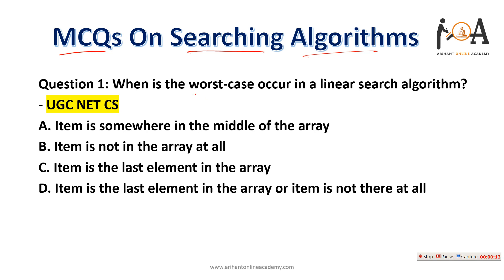Question one: when does the worst case occur in a linear search algorithm? Four options are given. Option A: item is somewhere in the middle of the array — this is not the worst case, it is considered the average case.